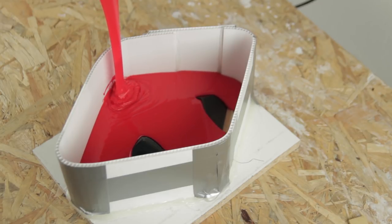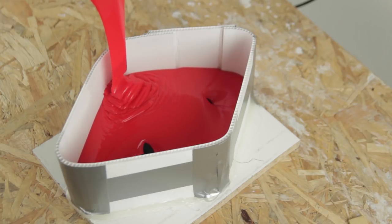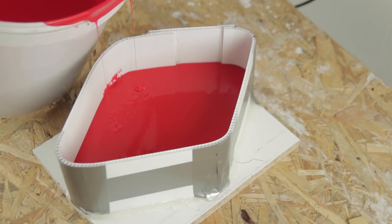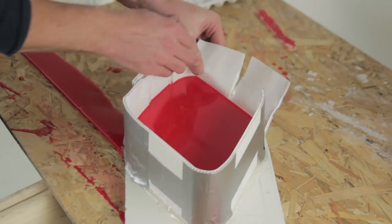So here it's just a matter of pouring it. I'm just pouring it from one side in a thin stream just to avoid air bubbles. So I would advise you to put like two to three centimeters above the top parts of the part you're casting just to have a strong mold at the end.